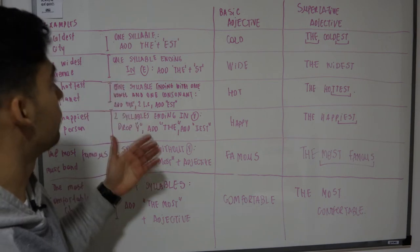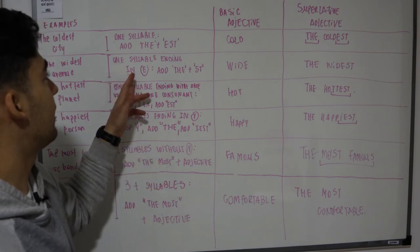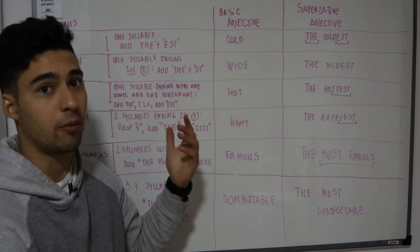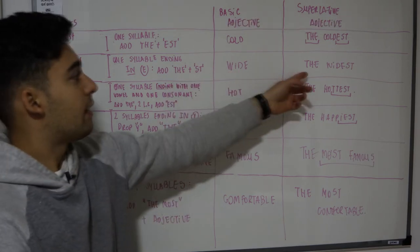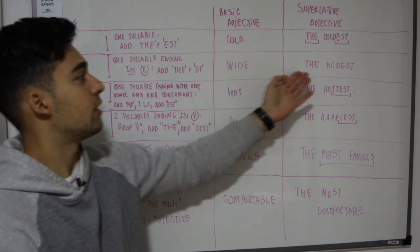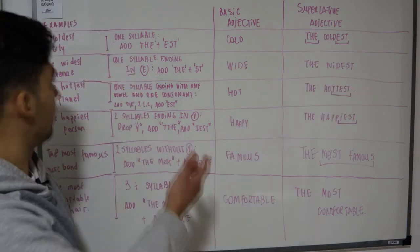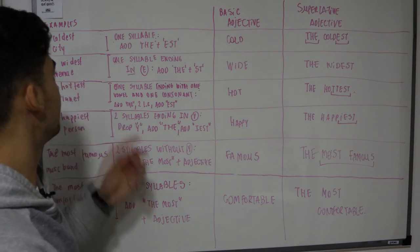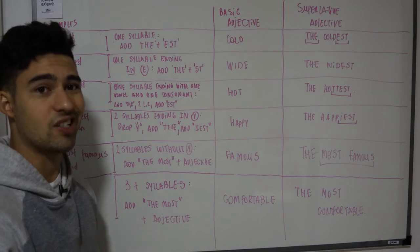En el segundo ejemplo, para la segunda regla, tenemos las palabras de una sílaba que terminan en e, como wide. Wide es amplio en español. Para decir wide agregamos también la palabra the como arriba, y como ya termina en e, solamente agregamos la s y la t. Entonces decimos the widest. Ejemplo: the widest avenue, sería la avenida más ancha.